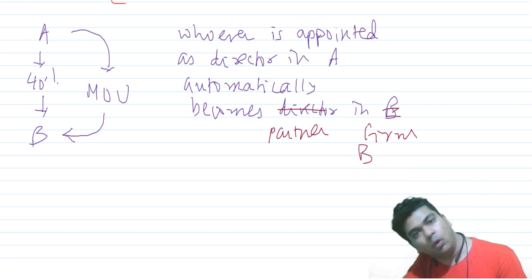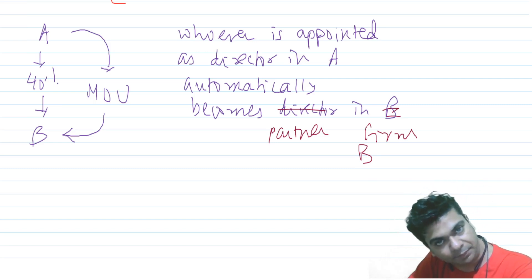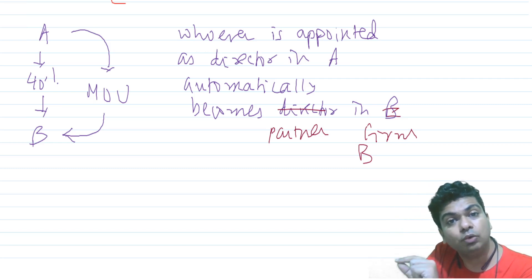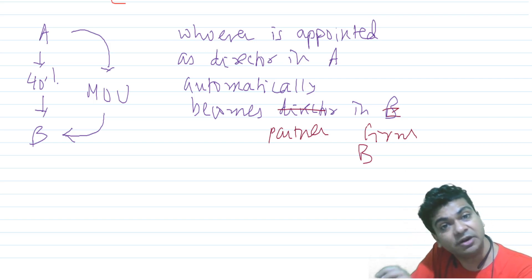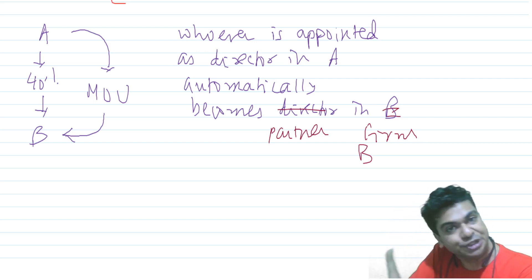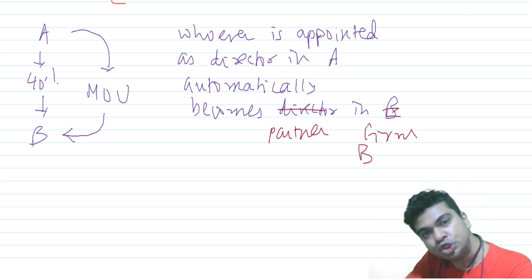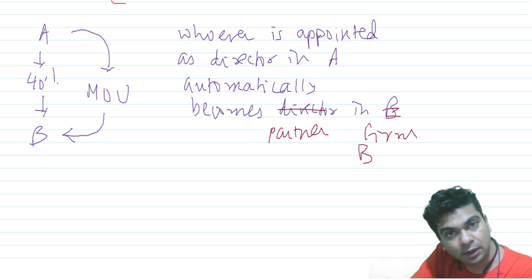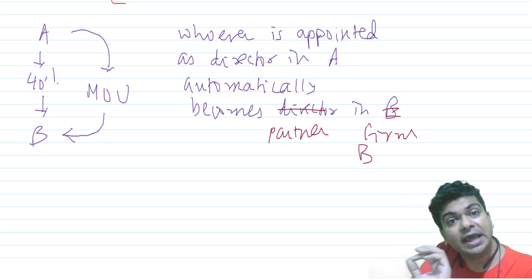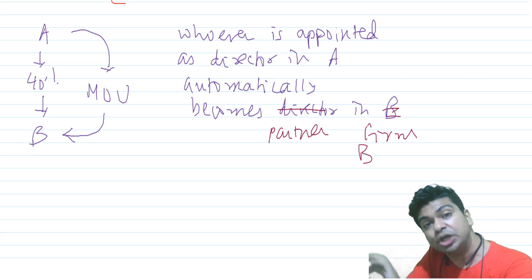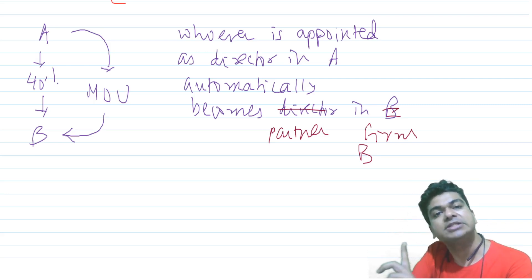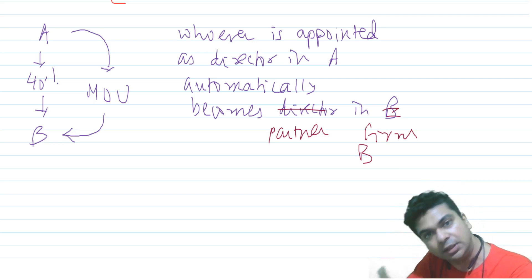To summarize: you will apply AS 21 only if there is a parent-subsidiary relationship. A parent-subsidiary relationship exists when the parent is in a position to control the subsidiary. The date on which this control is established will be understood as the acquisition date, and from the acquisition date we will start applying Accounting Standard 21.